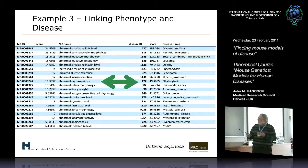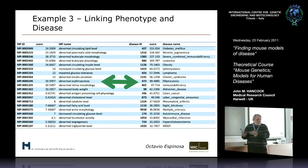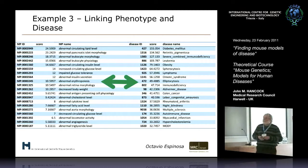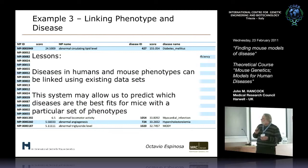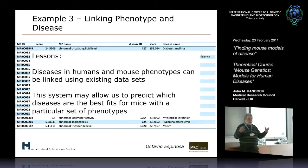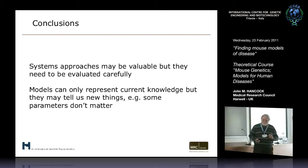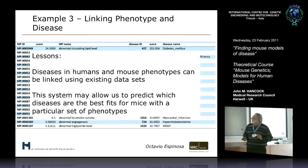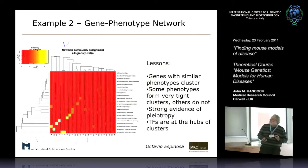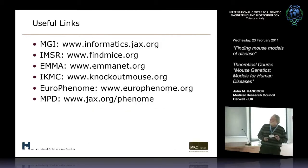We have a system we can possibly exploit to start doing some analysis. My main interest is finding MP terms associated with genes, but it may end up as a tool in Europhenome as well. This is not conventional systems biology, but it is using networks and gene interactions in ways that are potentially of interest. Systems approaches may be valuable but need to be evaluated carefully. Models can only represent current knowledge, but they may tell us new things.